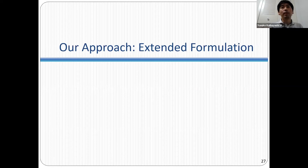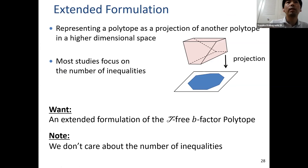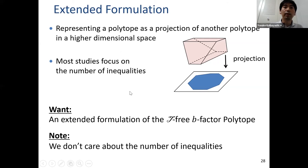Since obtaining a direct description of the T-free b-factor polytope seems difficult, our approach is to find an extended formulation — representing the polytope as a projection of another polytope in a higher-dimensional space. Most studies on extended formulations focus on minimizing the number of inequalities, but we do not care about that. In fact, our extended formulation has exponentially many inequalities, which is the biggest difference from previous work.